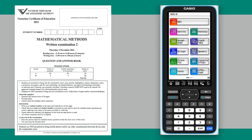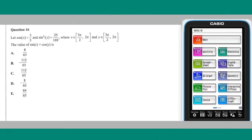This video will present solutions to the VCE 2021 Mathematical Methods Written Examination 2, Section A, questions 16 to 20. Question 16.